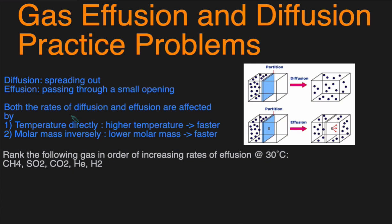The rates of effusion and diffusion are affected by temperature directly. So that means if you increase the temperature, the molecules will move faster, effusing and diffusing more quickly. And it's inversely related to the molar mass. Because heavier molecules will move slower than lighter molecules. So lighter molecules will be able to diffuse and effuse more quickly than heavier molecules.